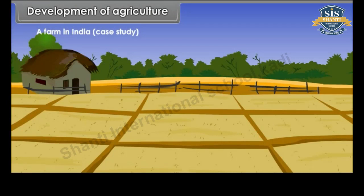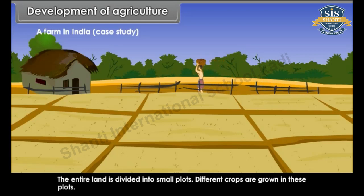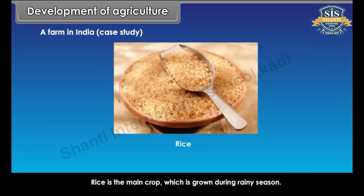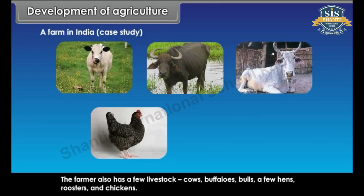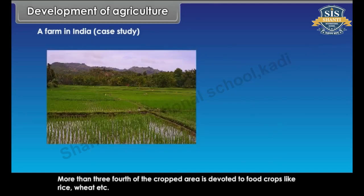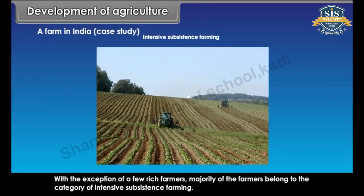A case study: a farm in India. The owner of the farm generally has his residence in the main village. The entire land is divided into small plots and different crops are grown in these plots. Rice is the main crop, grown during the rainy season. The farmer also has a few livestock — cows, buffaloes, bulls, a few hens, roosters and chickens. More than three-fourths of the cropped area is devoted to food crops like rice and wheat. The majority of the farmers belong to the category of intensive subsistence farming.